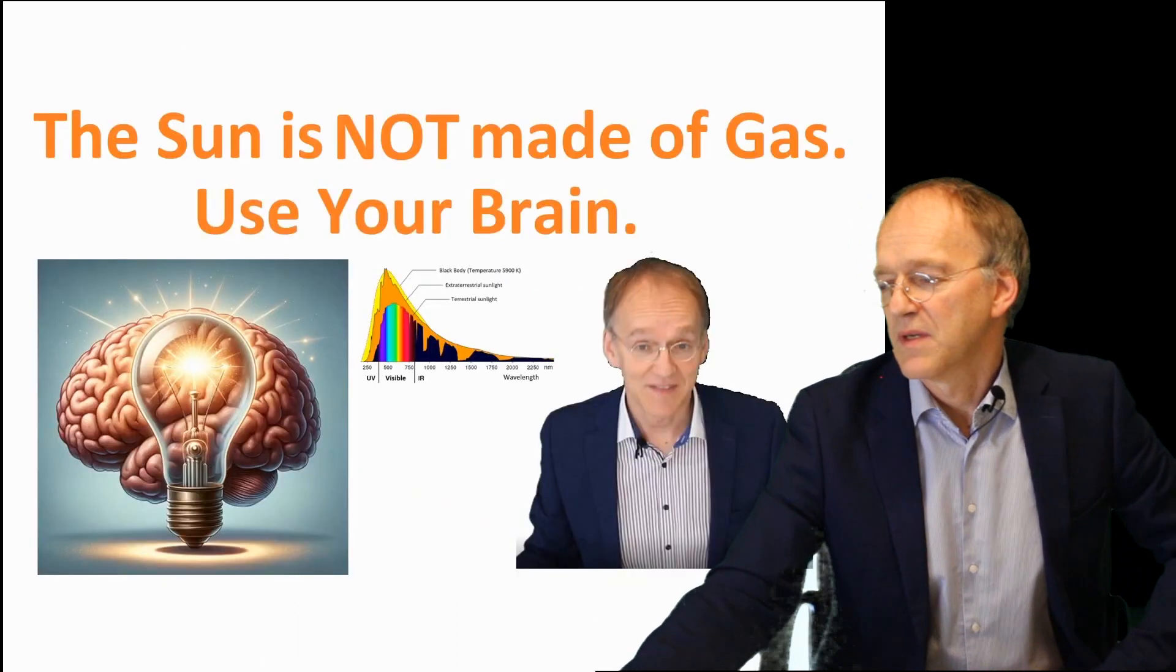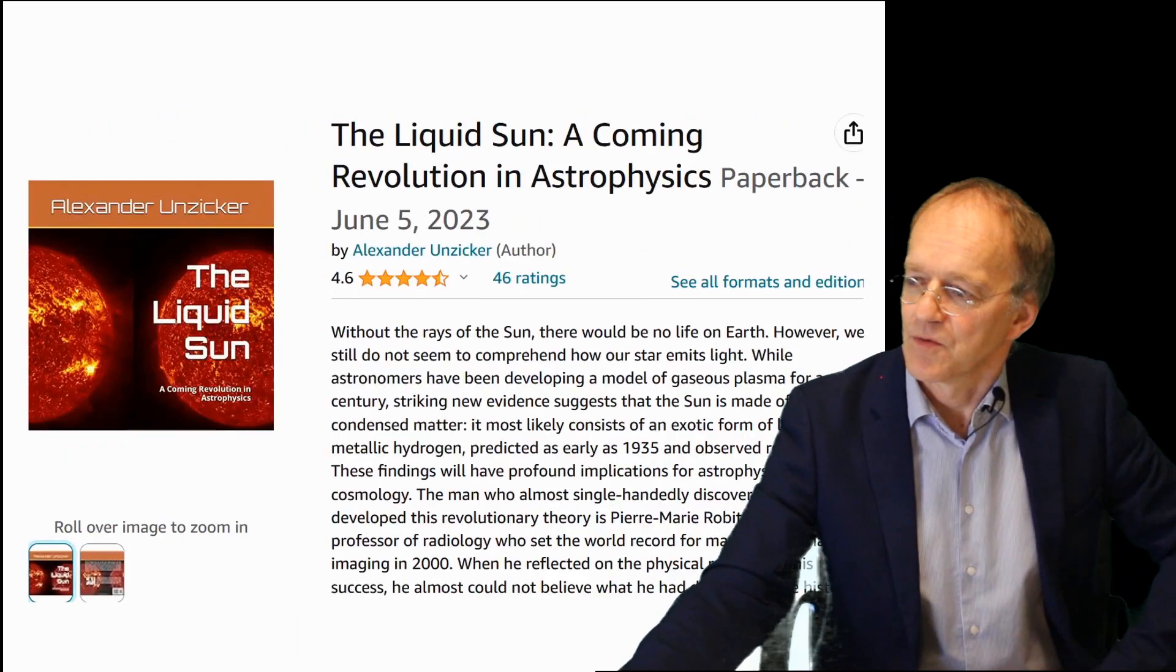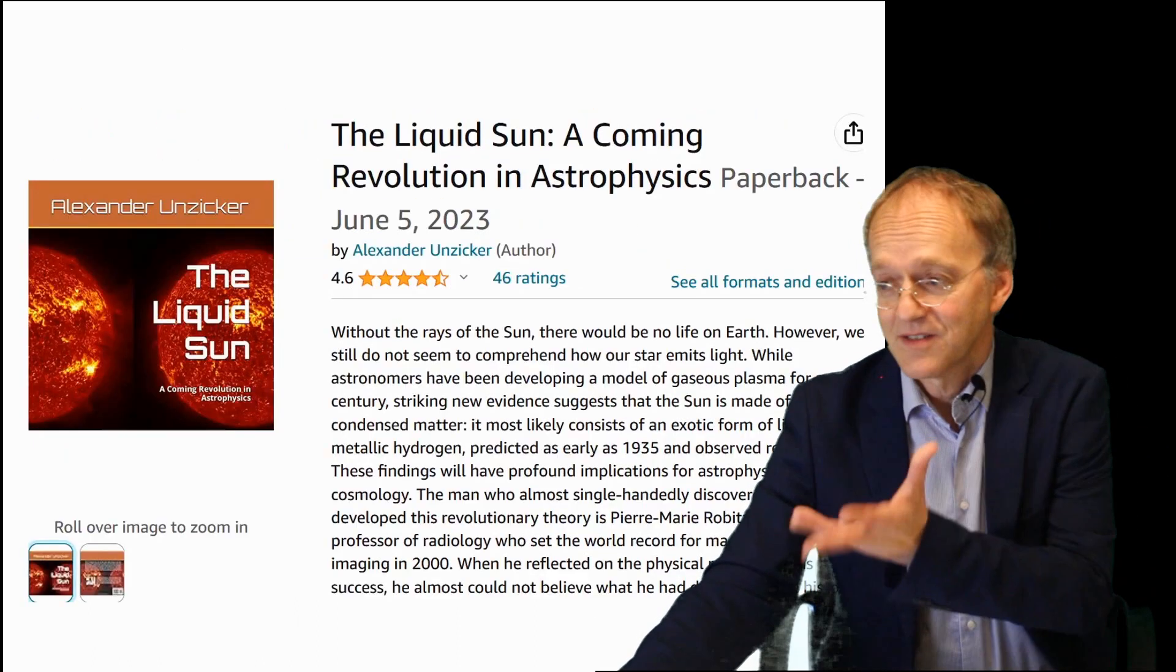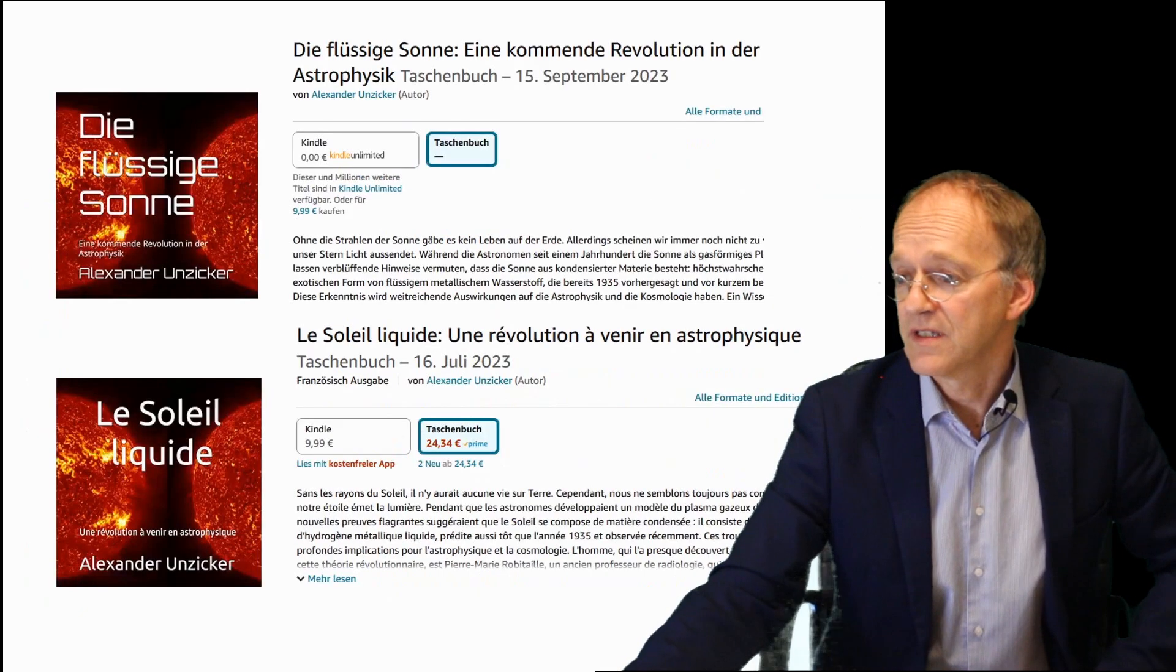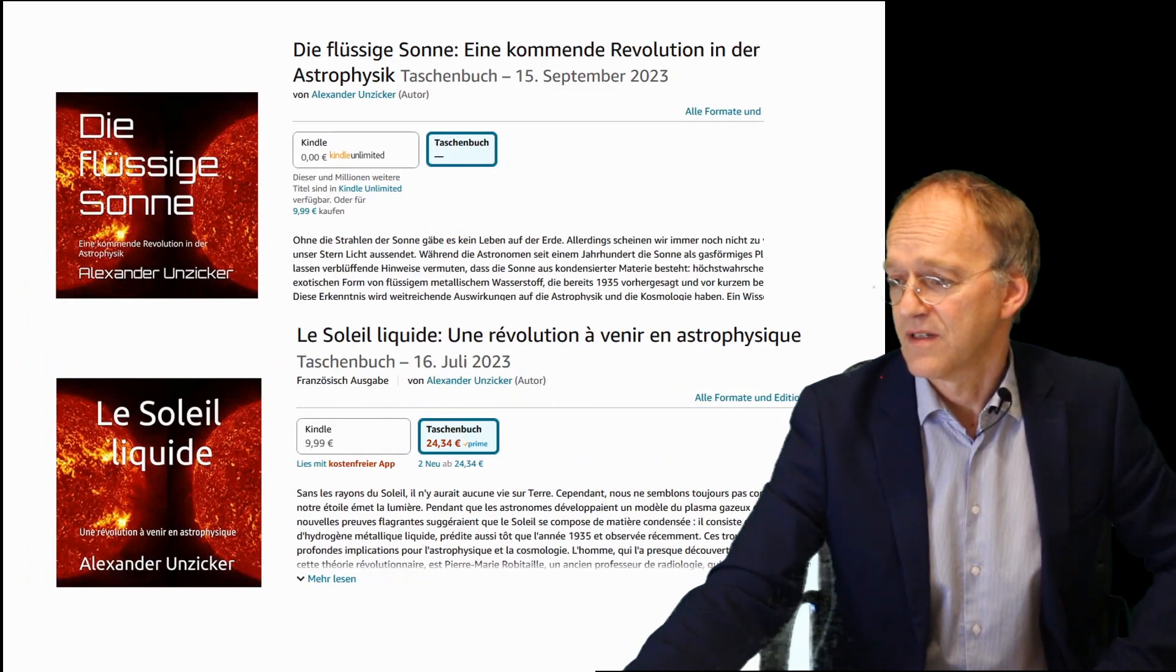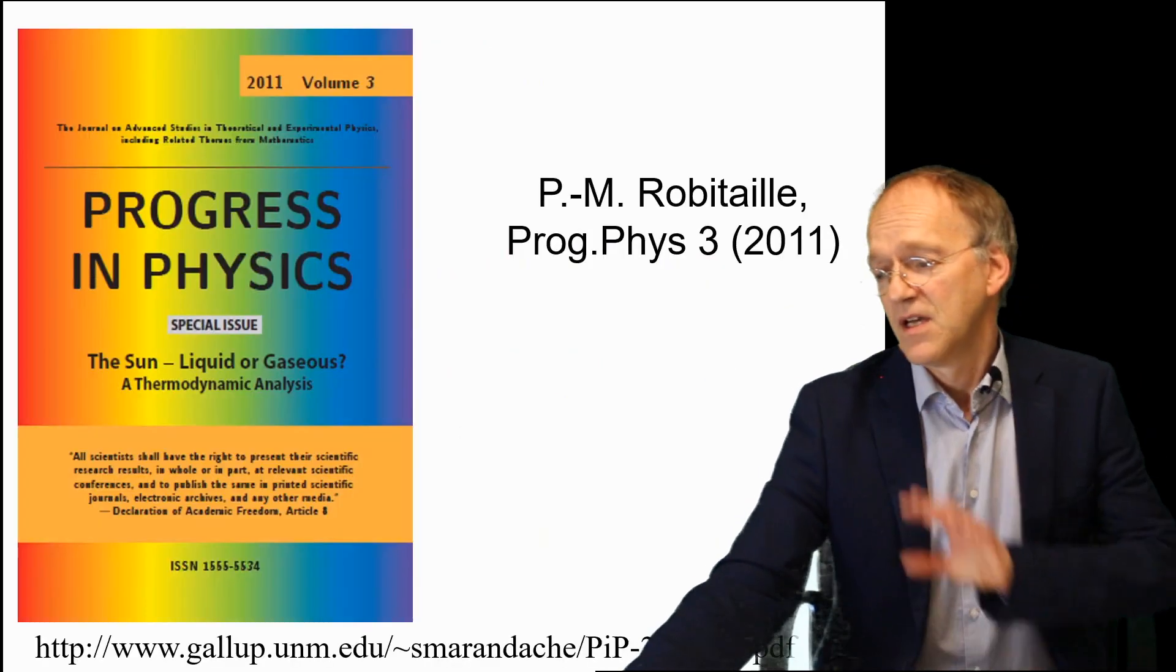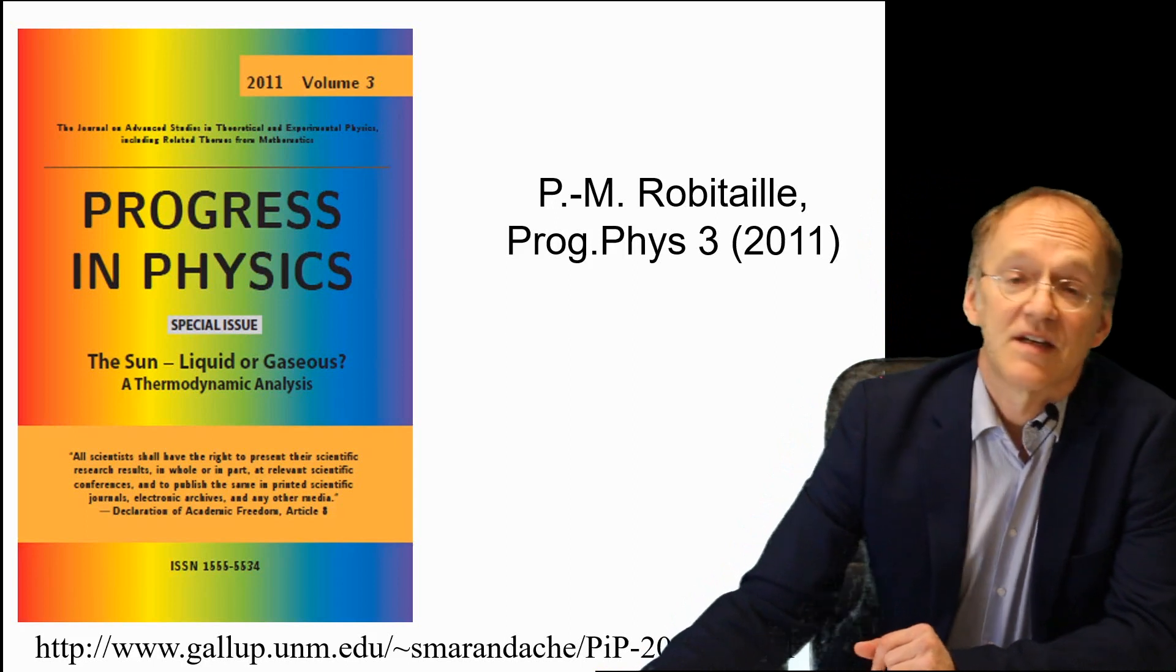But I think we already have sufficient evidence that this alternative model makes a lot of sense. I explained the continuous spectrum in another video, and if you want to know still more details, there is my book The Liquid Sun about Robitaille's model, and even more detailed these are the German and the French versions.